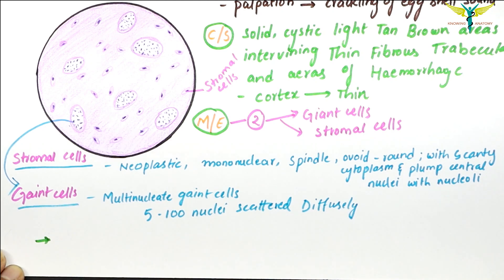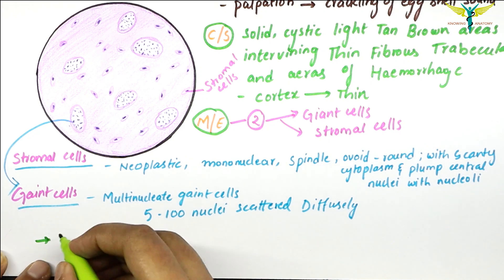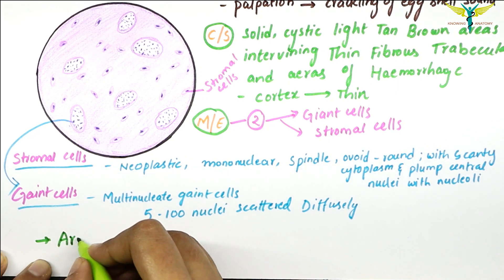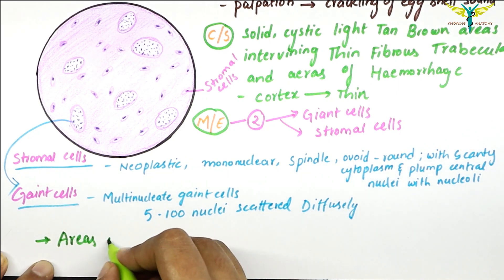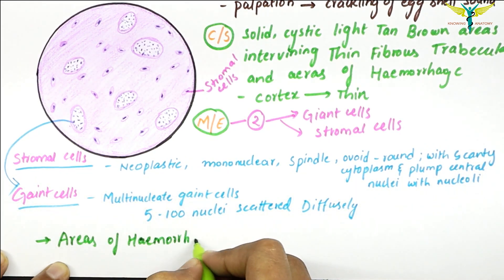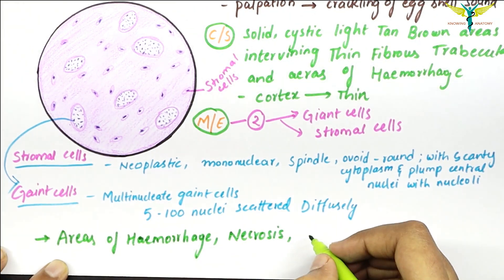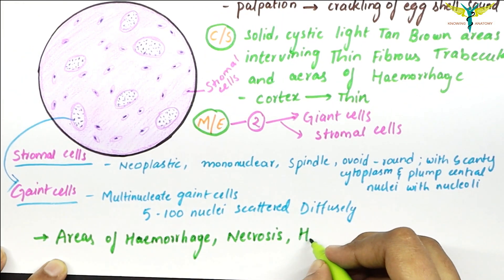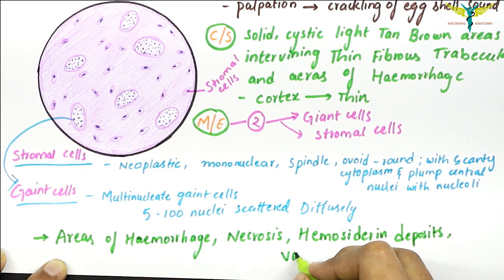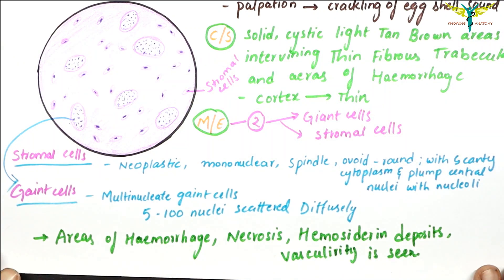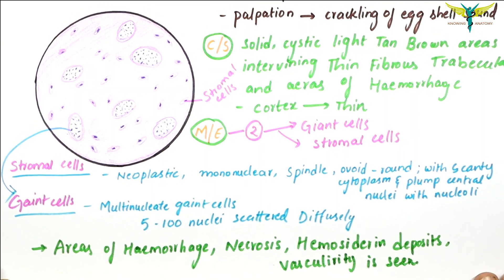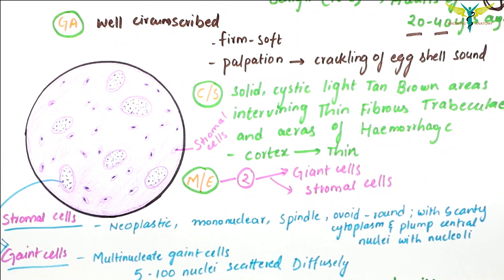In this tumor, you should remember that areas of hemorrhage, necrosis, hemosiderin deposition, and increased vascularity are seen. So guys, this is all about the giant cell tumor of the bone.